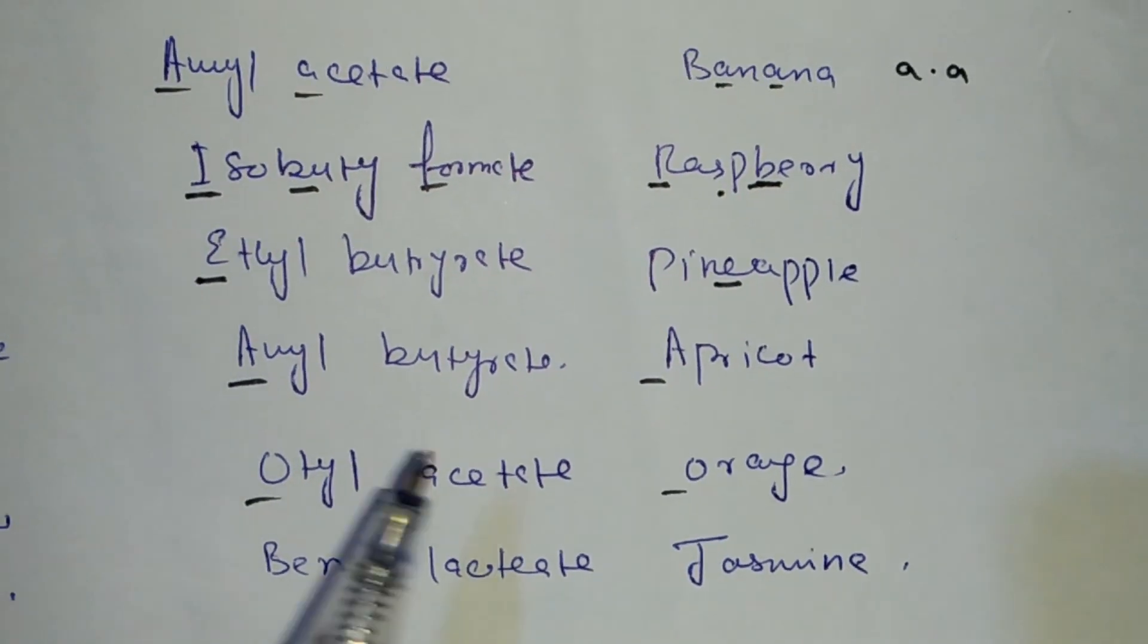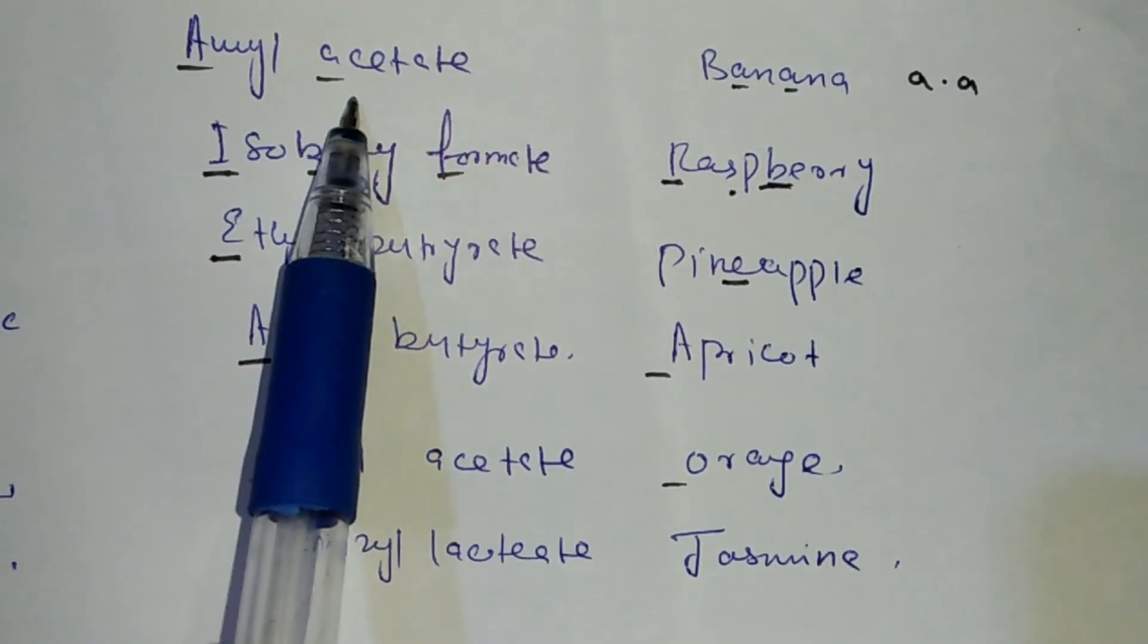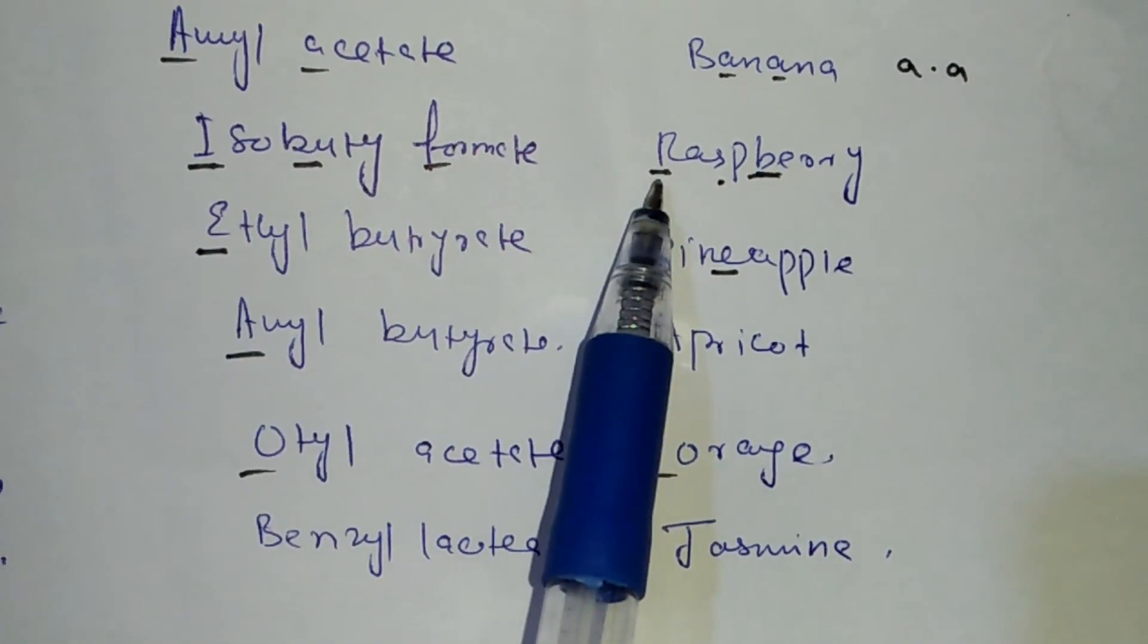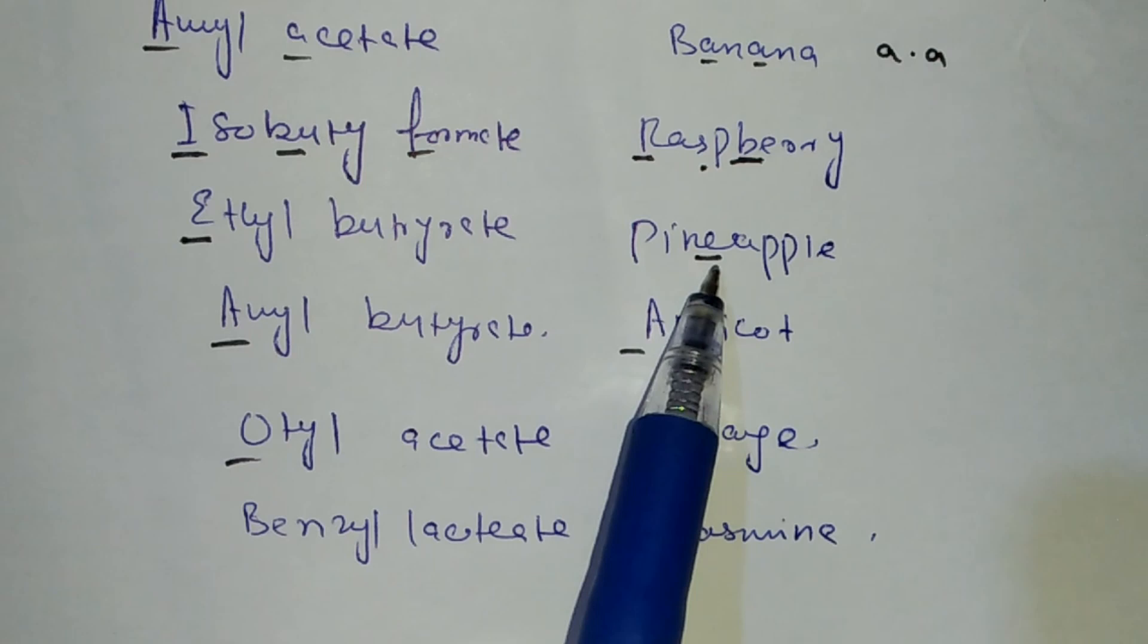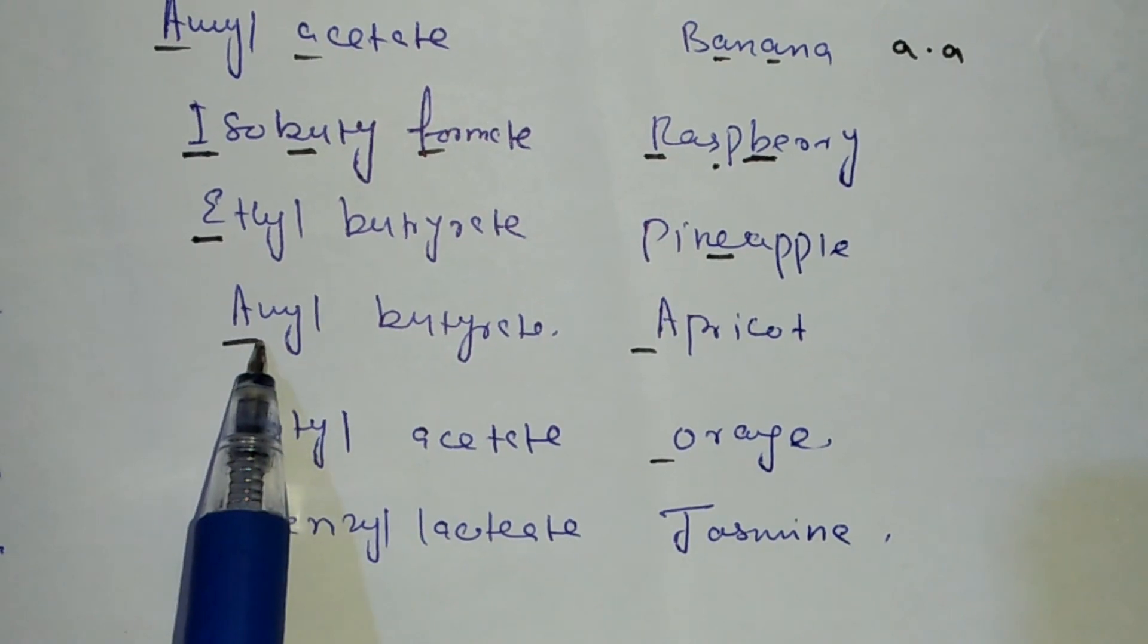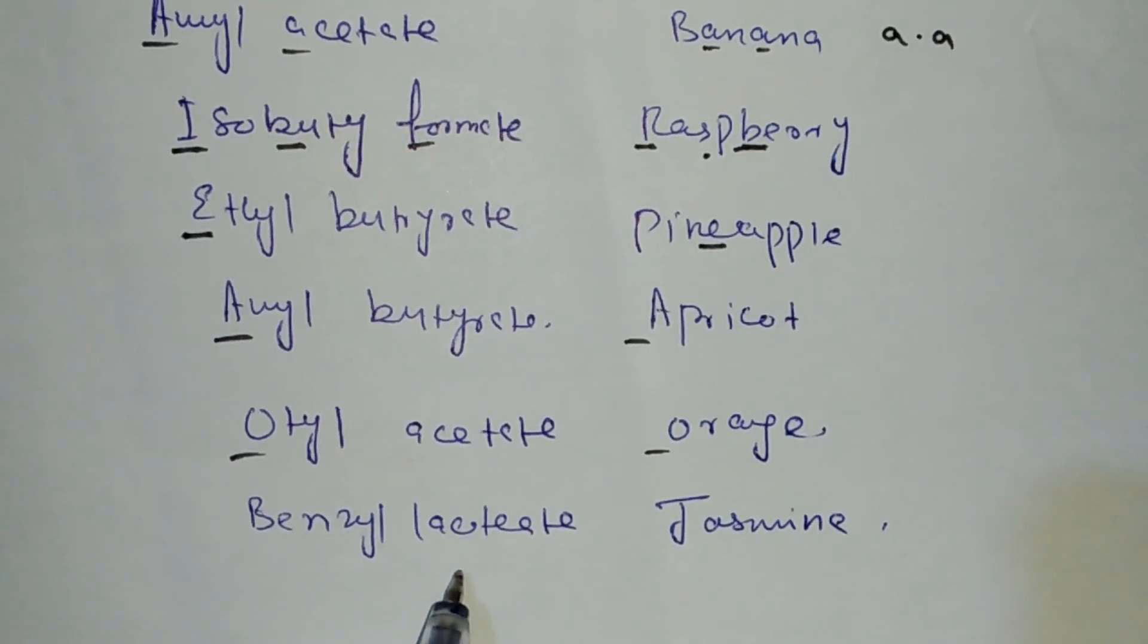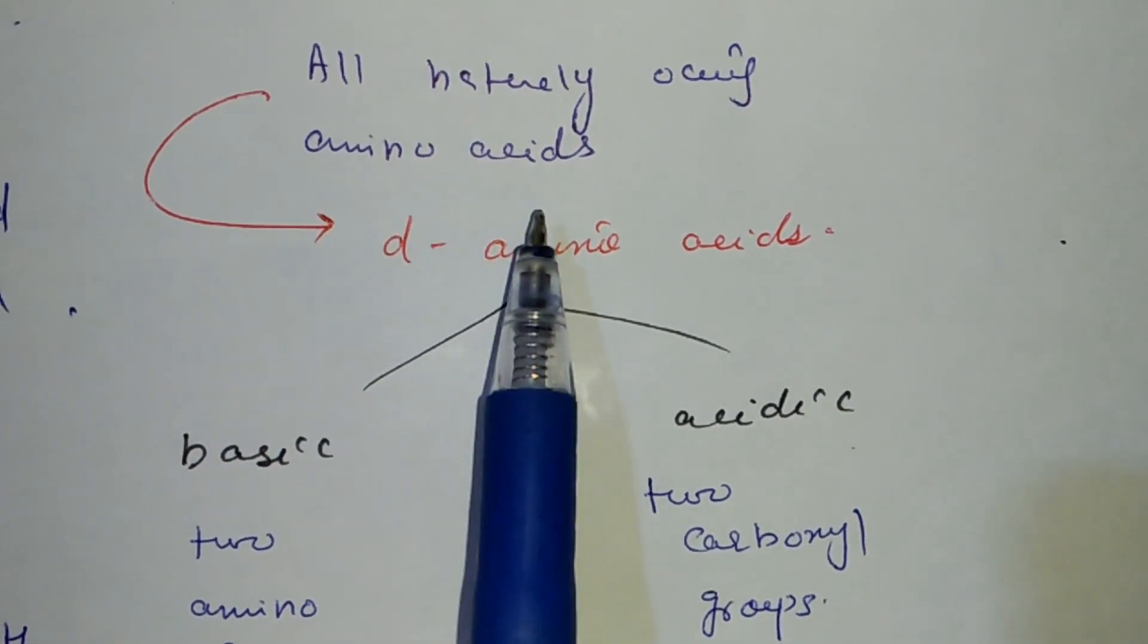We have different esters and their scents: Amyl Acetate smells like banana, Isobutyl Formate like raspberry, Amyl Butyrate like apricot, Octyl Acetate like orange, and Benzyl Acetate like jasmine.